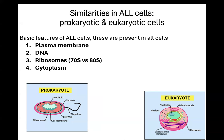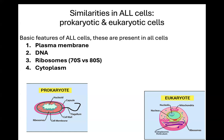It's important to know these common features because, for example, if a human — made up of eukaryotic cells — is infected by bacteria, which are made up of prokaryotic cells, and you want to give someone a drug like an antibiotic, you want to make sure you target something unique in the prokaryotic cell that's not part of the eukaryotic cell. So you wouldn't create a drug that targets the plasma membrane, because even though it might target the prokaryotic cell, it will also target the human cell.